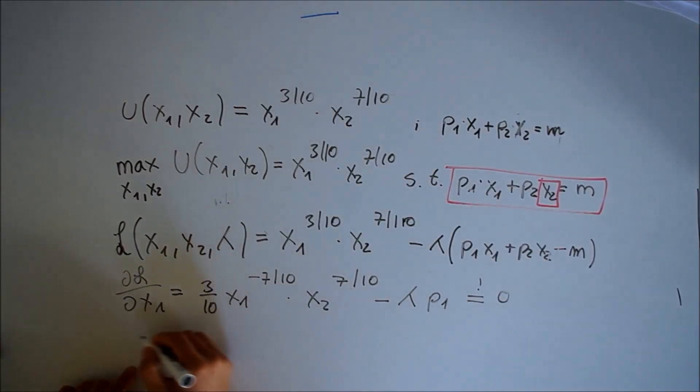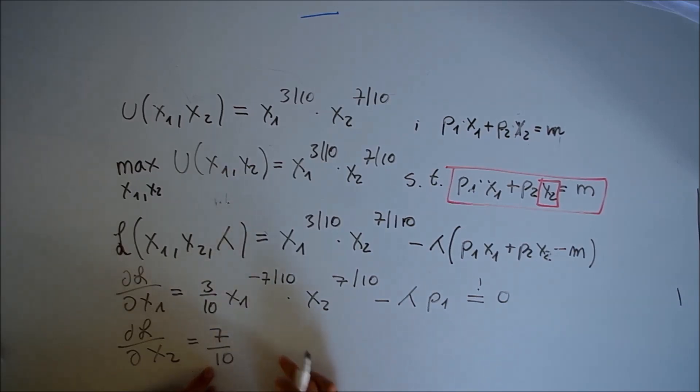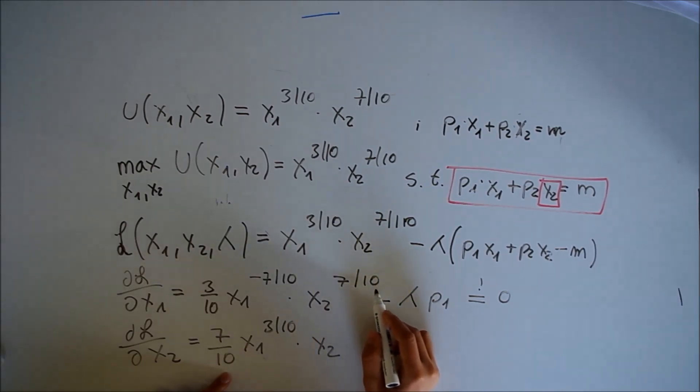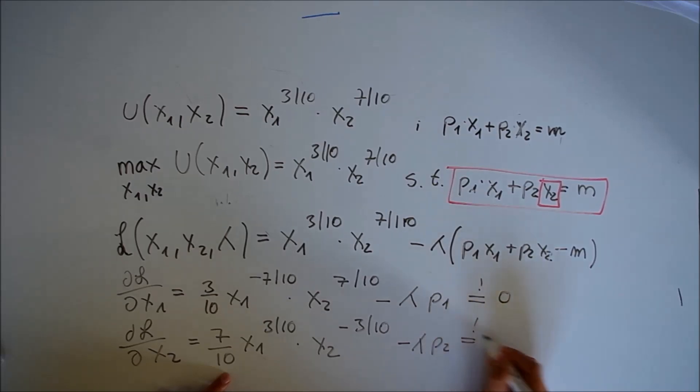We do the same for x2. ∂L/∂x2 = (7/10)*x1^(3/10)*x2^(-3/10) - λp2 = 0.